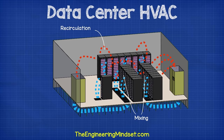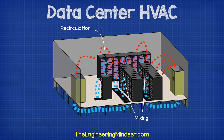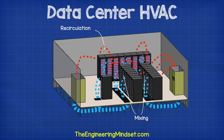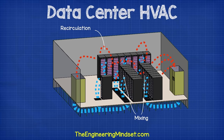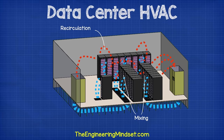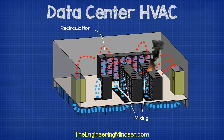In the early days, the server racks were positioned facing different ways and engineers soon realized this was very inefficient because the fresh cold air was just mixing with the warm discharge air off the servers. This meant that the servers were receiving different air temperatures — some hot, some cold — and this led to high energy consumption as well as a high failure rate of the servers.